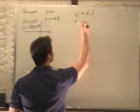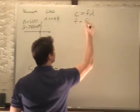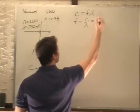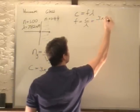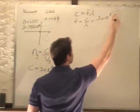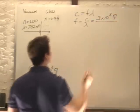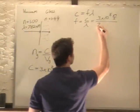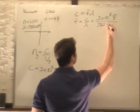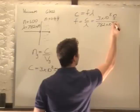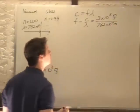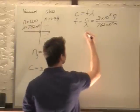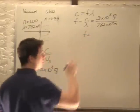Frequency equals c over lambda: 3 times 10 to the 8th meters per second divided by a wavelength of 782 nanometers, which is 782 times 10 to the minus 9 meters. If we divide that in,